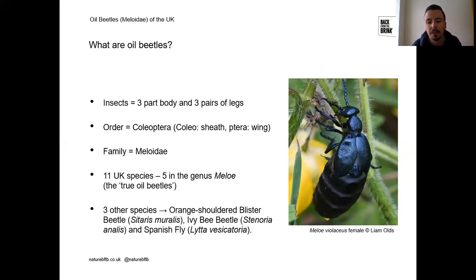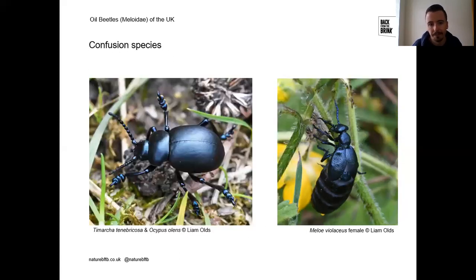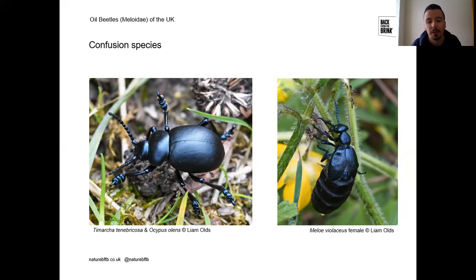This training workshop will just cover the five true oil beetle species. The first step in oil beetle identification is confirming that what you're looking at is in fact an oil beetle and not another type of beetle. One common confusion species is the bloody-nosed beetle, which is quite a large black beetle that looks superficially similar to oil beetles.